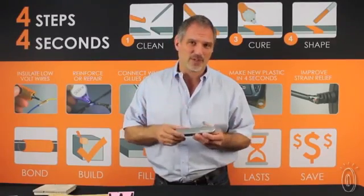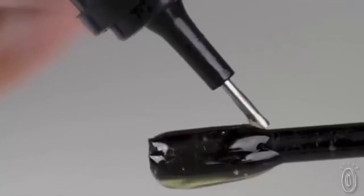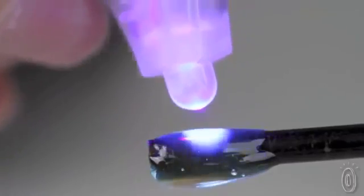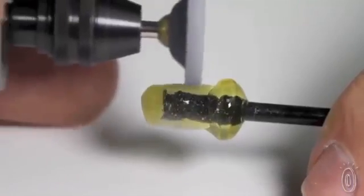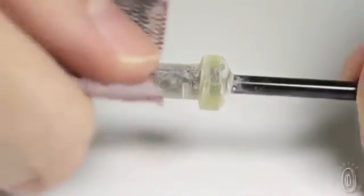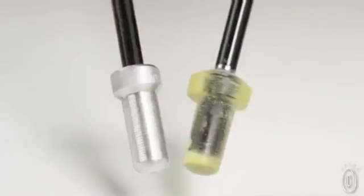This is something new and unique because you can actually create the part that's missing, the part that's broken that can't be repaired. So if you've got two pieces and one's gone, you can actually make the piece with Bondic.